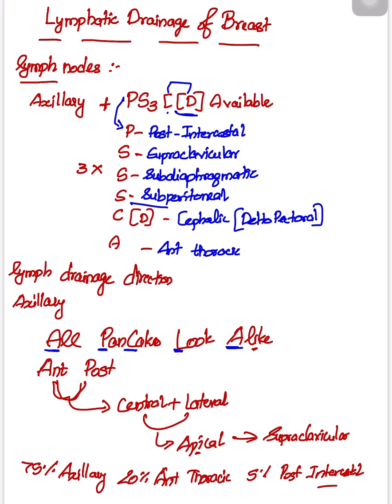C and D are written in brackets. C is the cephalic group of lymph nodes, and the other name for the cephalic group is deltopectoral lymph nodes. The last A is anterior thoracic lymph nodes. These are the lymph nodes available for lymphatic drainage.